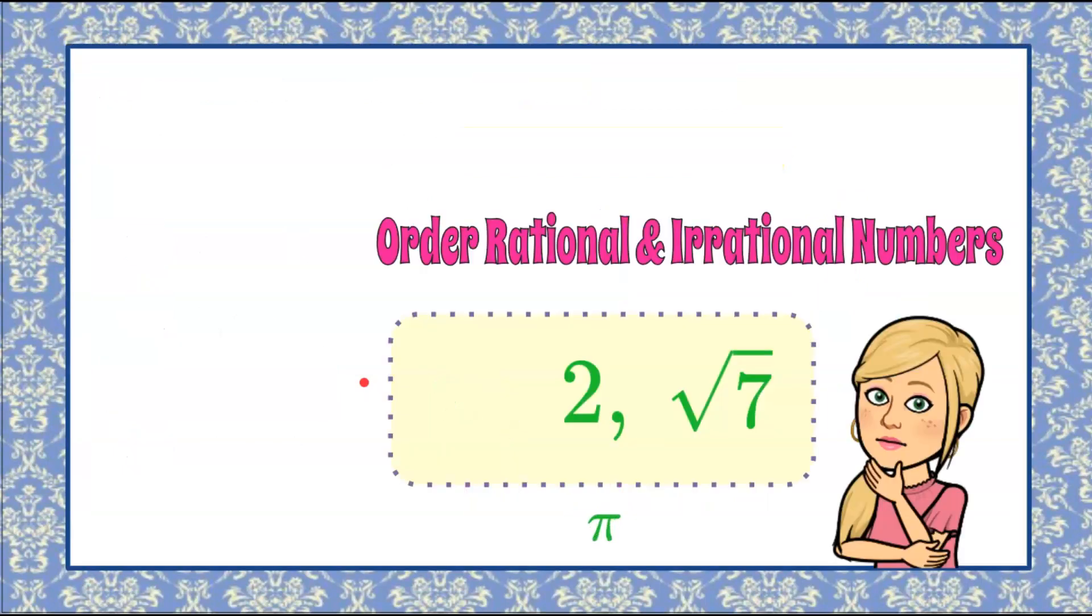And there you have it. That is how you order rational and irrational numbers by using a number line to determine the value of an irrational number.